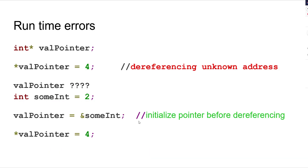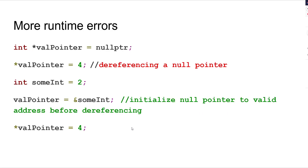Runtime errors are errors that you get when you run the program — they are not compile errors, but when you run the program you will get errors. For example, int* valPointer — you're declaring a pointer and trying to put a value in it, but is it pointing to something first? No. So this would be wrong — you're dereferencing without making it point to something. Declare a variable, make valPointer point to it, then dereference it. Similarly, int* valPointer = nullptr — you can't dereference it because it doesn't exist. Create an int, put an address in it, then dereference it.